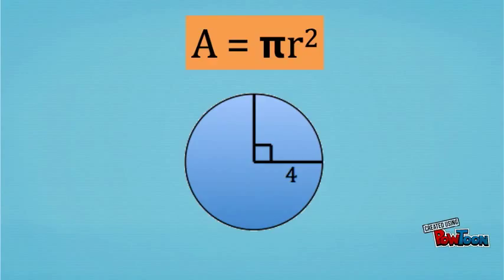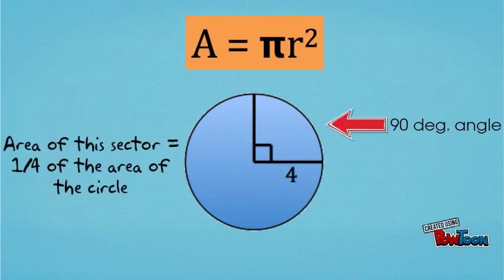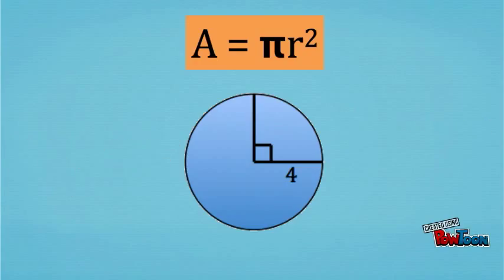Let's start with something easy. This sector here has a central angle of 90 degrees. Since every circle has 360 degrees, that means that this sector is one quarter of the area of the circle. So in order to find the area of this sector, we first need to find the area of the circle, and then it's easy. All we need to do is figure out what one fourth of that area is.